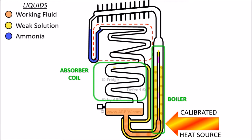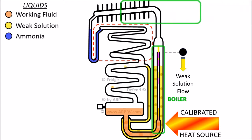The weak solution flows by gravity back to the absorber coils. We will return to the flow of the weak solution within the absorber coils. Going back to the top of the pump tube, the ammonia gas rises up to the condenser. The condenser changes the ammonia gas into liquid ammonia by cooling the gas.